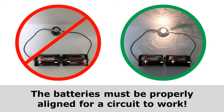The batteries must also be properly aligned for a circuit to work. On the left, you can see that those batteries are facing opposite directions, so that will never work — those batteries are working against each other and that keeps the light bulb from coming on. But on the right, you can see that those batteries are going the same direction. They're aligned properly, and that allows electricity to flow and that light bulb to glow.